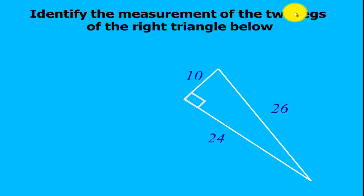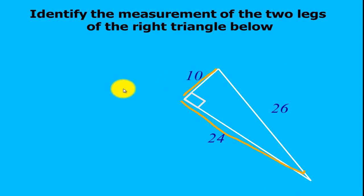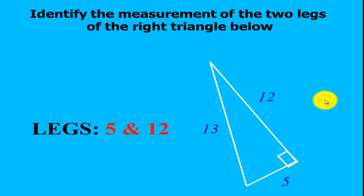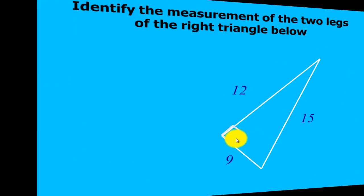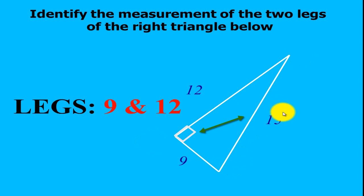Identify the measurement of the two legs of the right triangle below. The two legs are the sides containing the right angle, so the measurements will be 10 and 24. For the next triangle, the legs are the sides containing the right angle, so we have 5 and 12; the hypotenuse measurement will be 13. And for another triangle, the leg measurements will be 12 and 9, and then for the hypotenuse, the measurement will be 15.